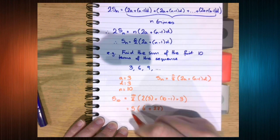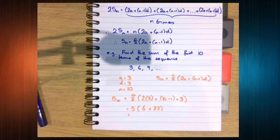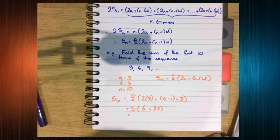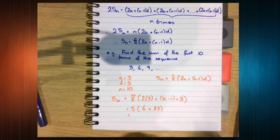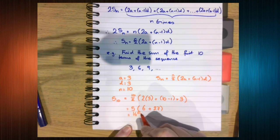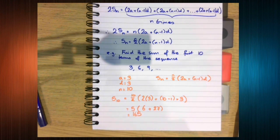And then it's just a case of calculating that. So with the calculators, 5 times 6 plus 27 is 165. Now you can check this on your calculator.